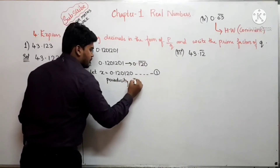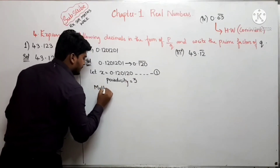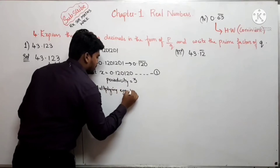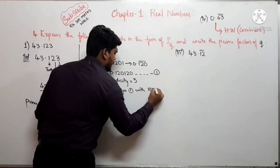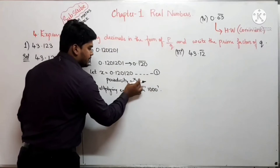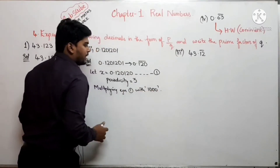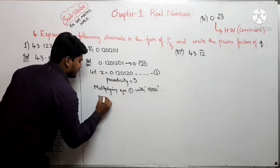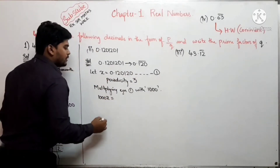यहाँ 1, 2, 3 — तीन numbers के ऊपर bar है, तो periodicity है 3। Next step: equation 1 को 1000 से multiply करेंगे — periodicity 3 है इसलिए 1000 (3 zeros)।